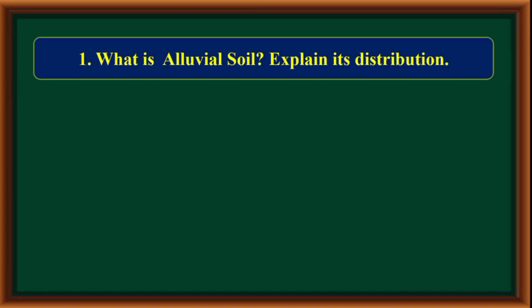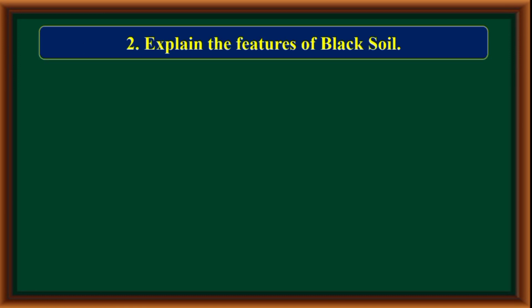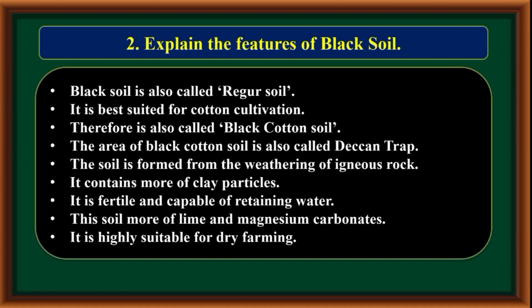10th standard social science revised textbook videos — additional questions with answers, geography chapter 12: India soils. What is alluvial soil? Explain its distribution. The soils in the lower areas are called alluvial soil. These soils are most extensively spread over vast areas compared to other types of soil, deposited over approximately 7.7 million square kilometers, covering Uttar Pradesh, Bihar, besides Narmada and Tapti valley, and the coastal plains.